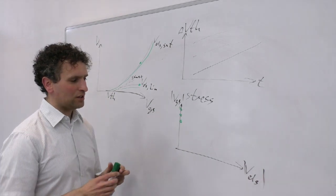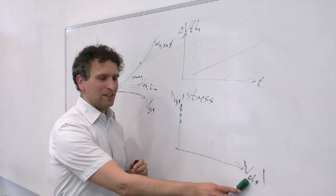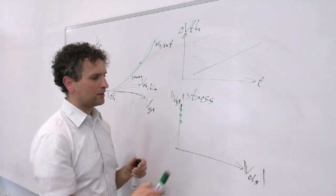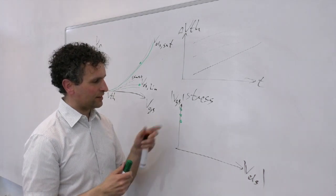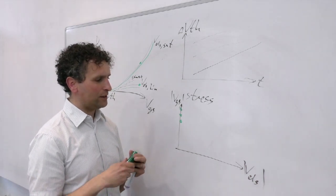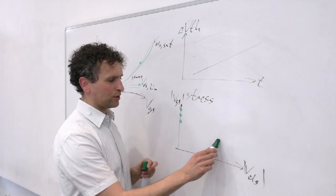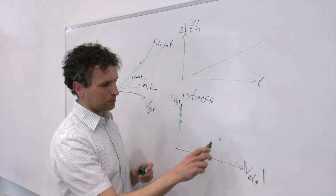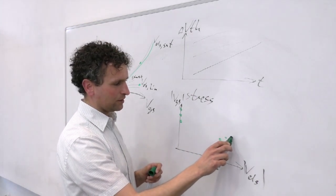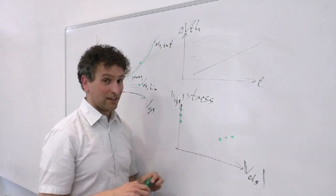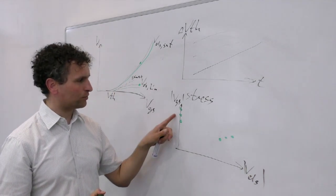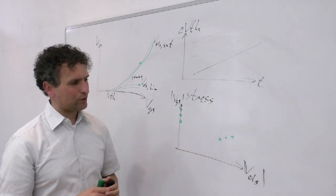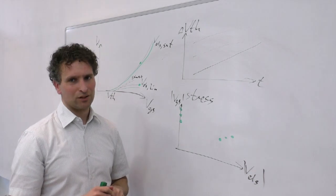For hot carrier injection, it's more like I define a large VDS to be the stress condition. So I'm somewhere on this line here. And in the past, we then have defined the gate source voltage to be the value that leads to the maximum of the substrate current for this particular drain source voltage. So you can repeat it for different drain source voltages and you end up with different points over here. As the next dimension, you can also add temperature, which is really important for NBTI or PBTI, which is not that important for carrier injection, but it has an impact there as well.